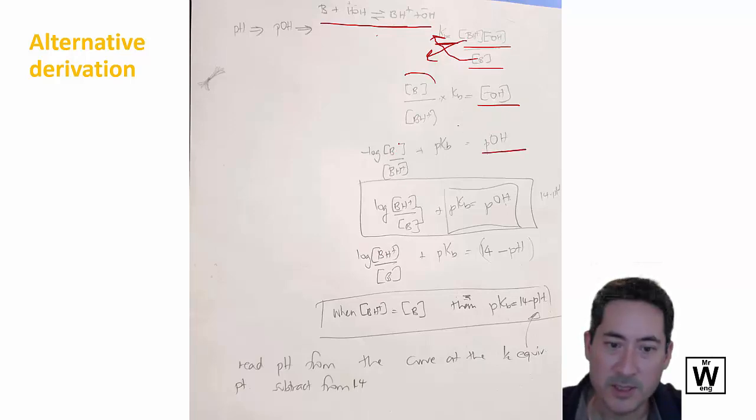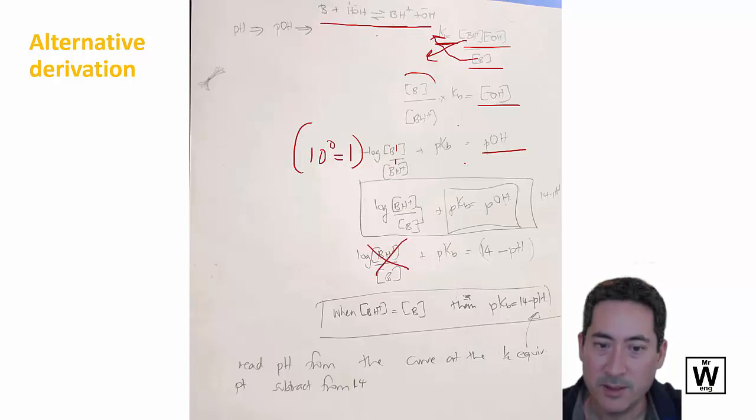And so the log, because these are equal, the log of 1 is 0. So 10 to the 0 is 1, if you want to look at it in the reverse way. But you don't even need to know that. So that's how we eventually just cancel that out. And so we've got Kb and OH. So take the negative logs of these and you get Kb equals pOH.